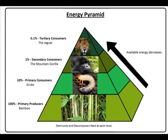Every living thing has a special job or role in the ecosystem. This role is called a niche, which is very similar to a person's occupation. An organism's niche is the way it gets food energy and how it might give energy to others in a food chain or a food web.